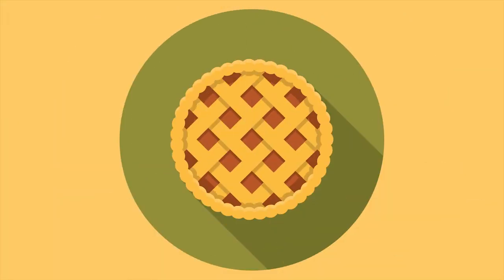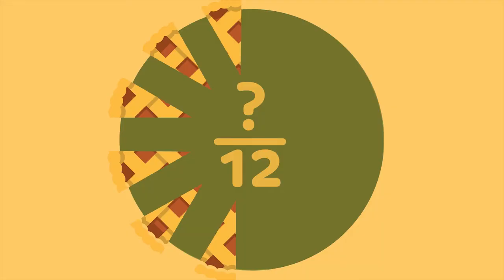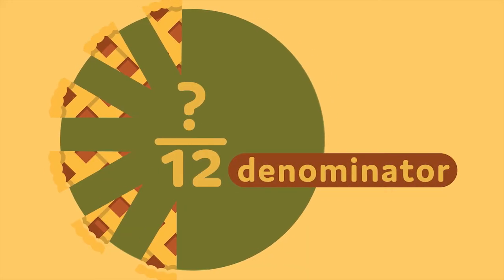This pie is divided into 12 equal parts. Marcel and his friend each ate three pieces of pie. What fraction of the pie did the two boys eat? The denominator is the total number of pieces that make up the pie, 12.